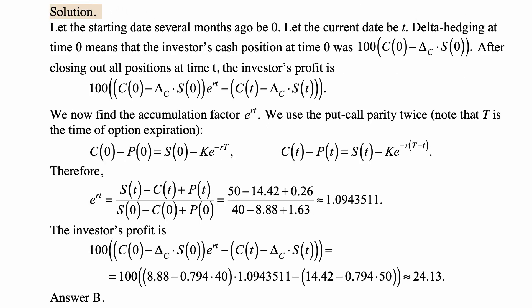Here's the solution. Let the starting date several months ago be 0. Let the current date be t. Delta hedging at time 0 means that the investor's cash position at time 0 was 100 times C(0) minus delta_C times S(0).